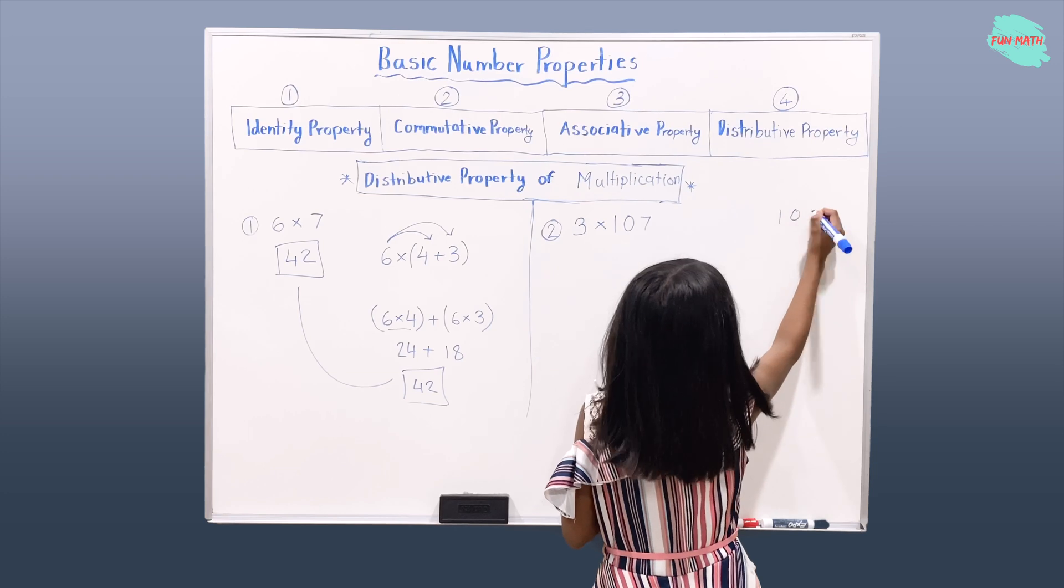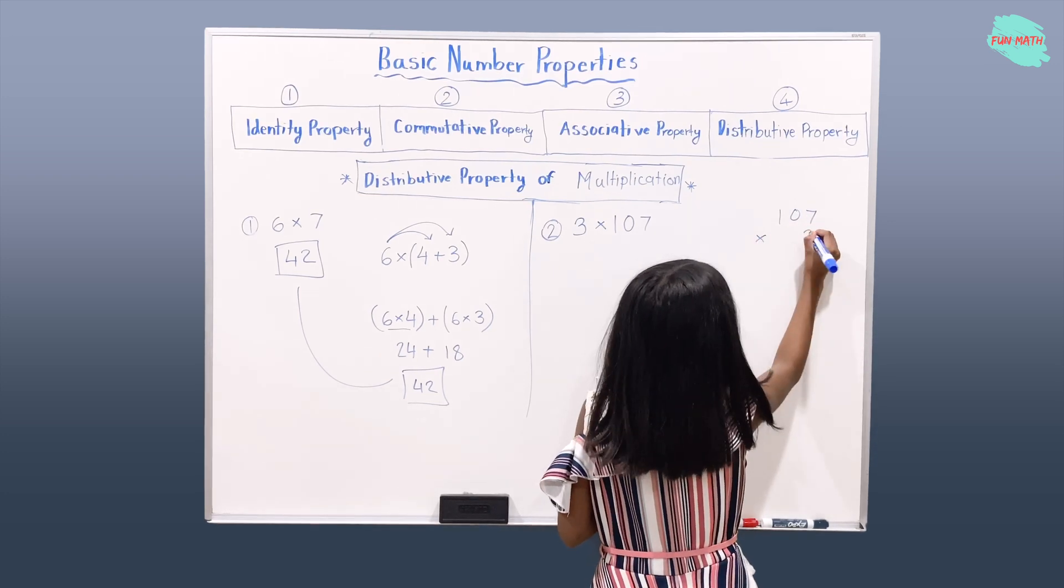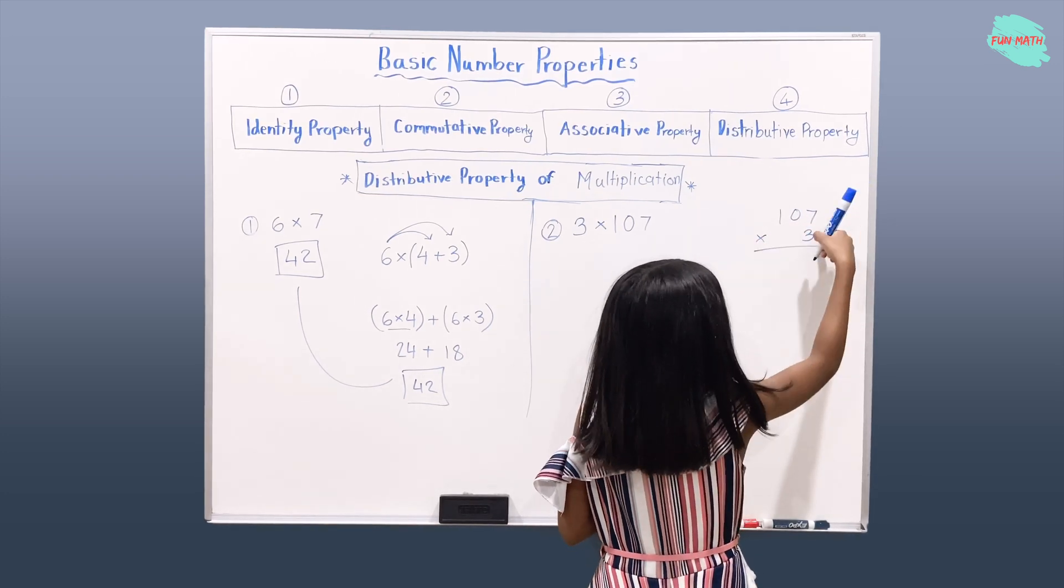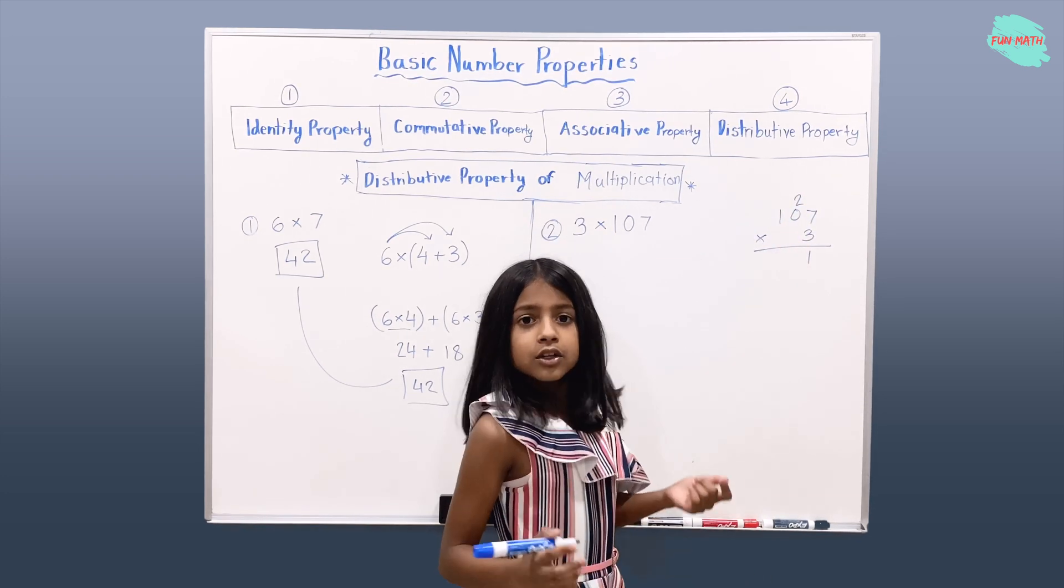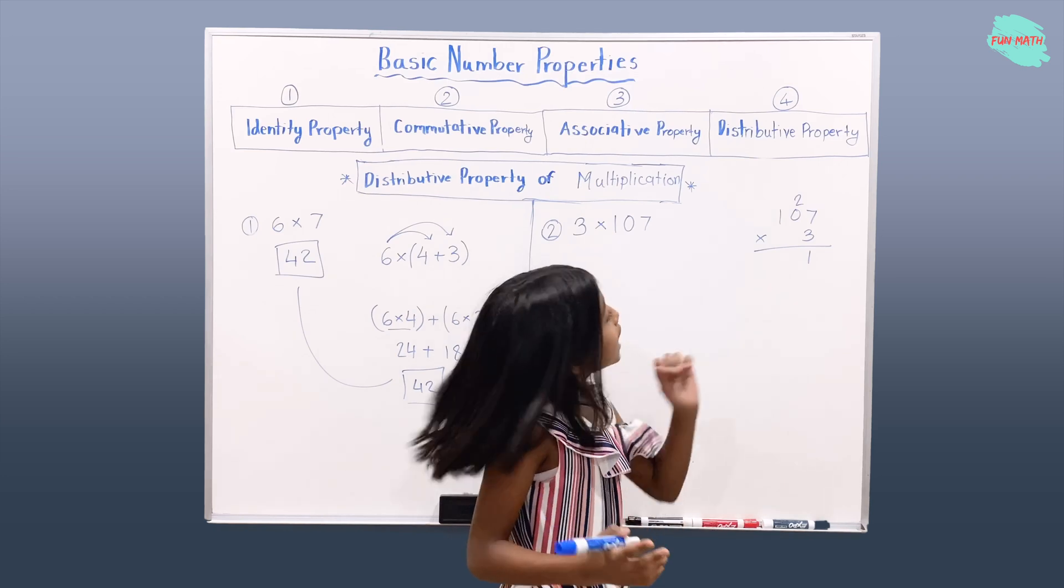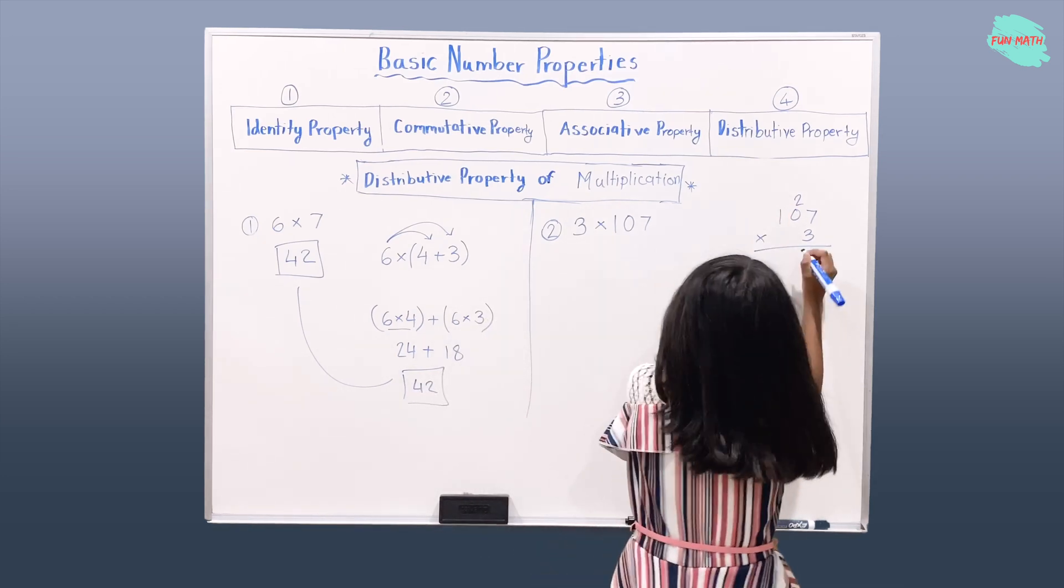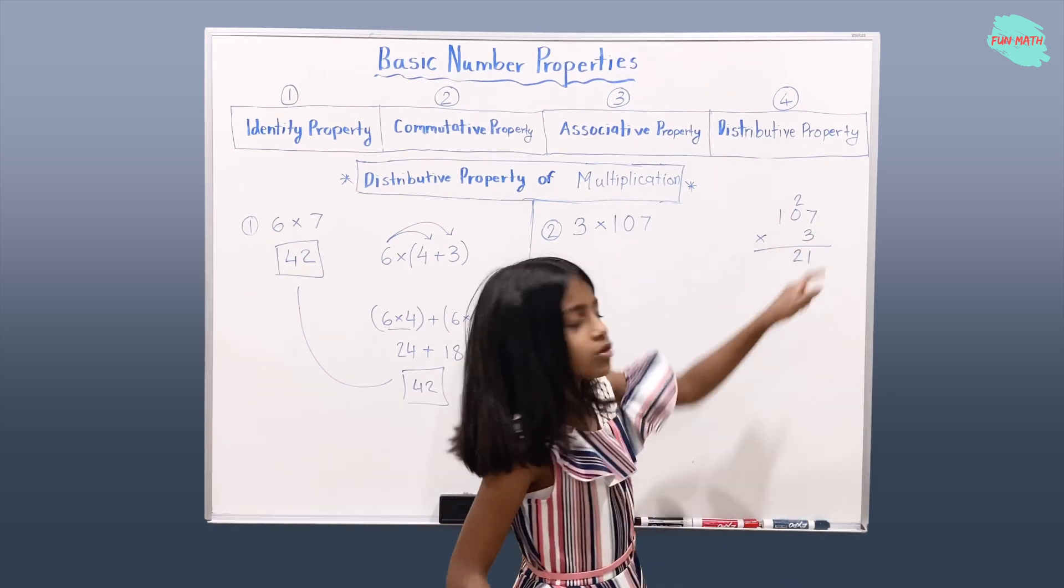So, 107 times 3. Multiply 7 and 3, you get 21. Multiply 0 and 3, you get 0, and then 0 plus 2, you get 2. And 1 plus 3, you get 3.